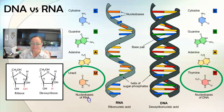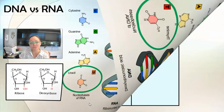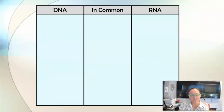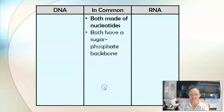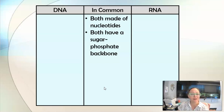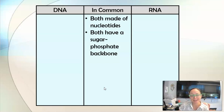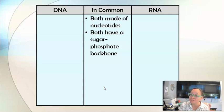Looking at a table to compare and contrast these two nucleic acids: in common, they both are made of nucleotides, they both have a sugar-phosphate backbone, they both are polymers and nucleic acids, they both are made of C, H, N, O, and P, they both are made in the nucleus, and they both have the nitrogen bases C, G, and A.